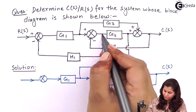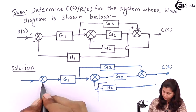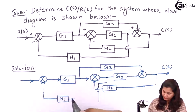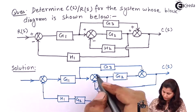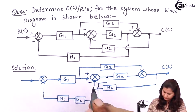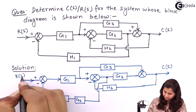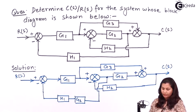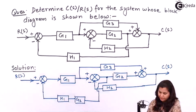So this takeoff point is shifted to this position, and we will multiply H1 with G2. So the two transfer functions they will be multiplied.